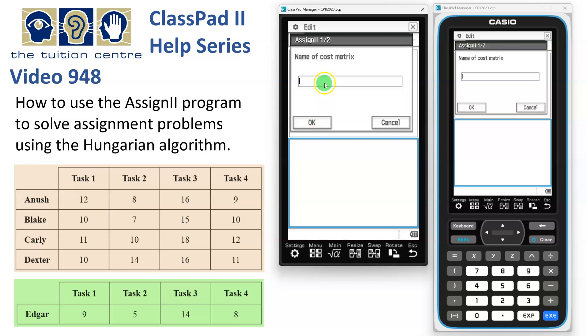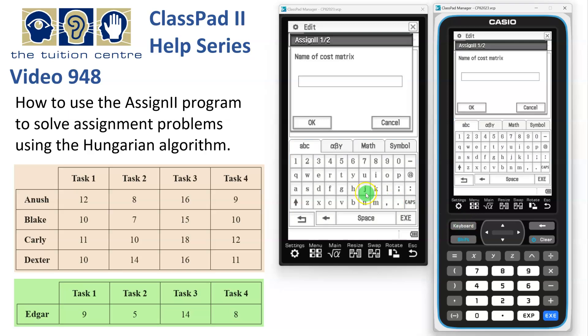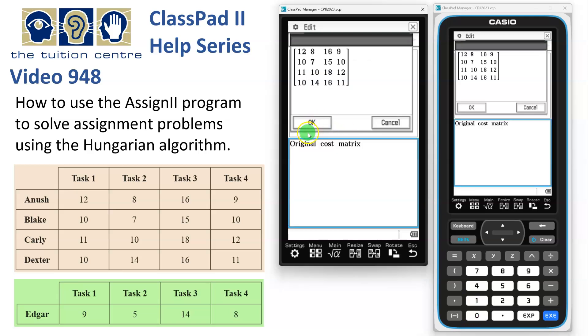And the name of the cost matrix. Now I've stored it in A if you remember. So I'll get the keyboard up, tap in A and say OK. Do we want to minimize or maximize the assignment? We want the minimum cost, so we'll put in a zero and say OK. And so here's the original cost matrix that we've already stored.